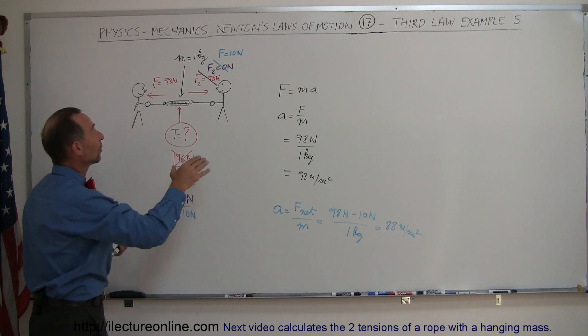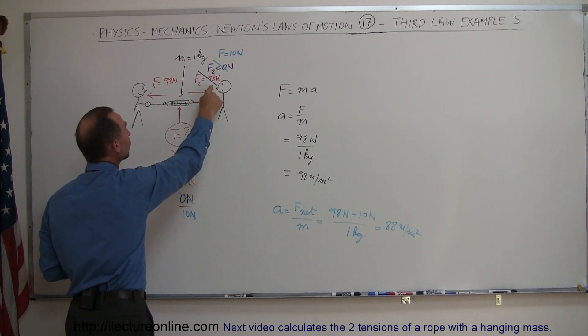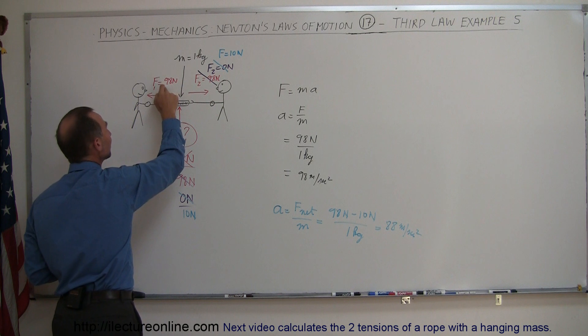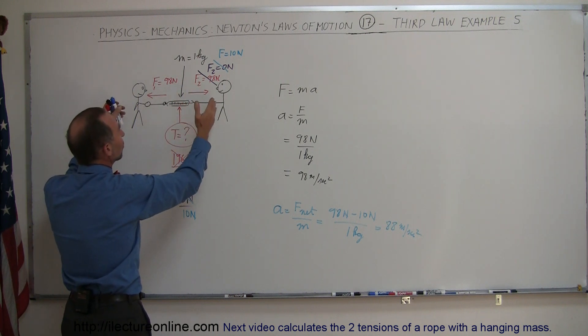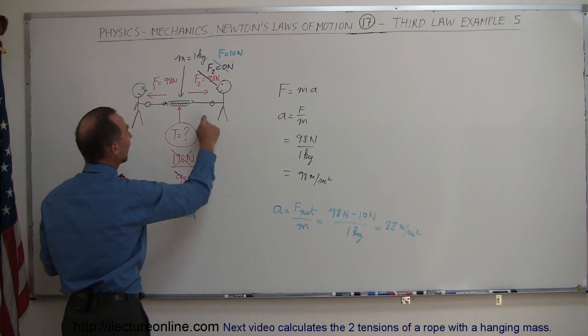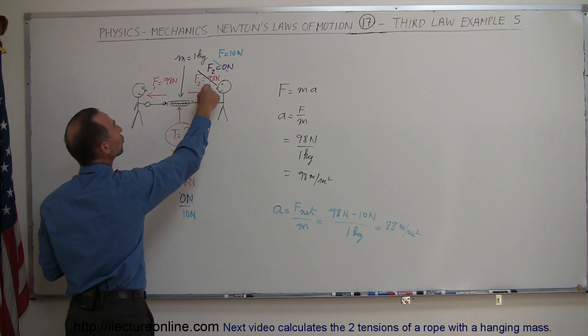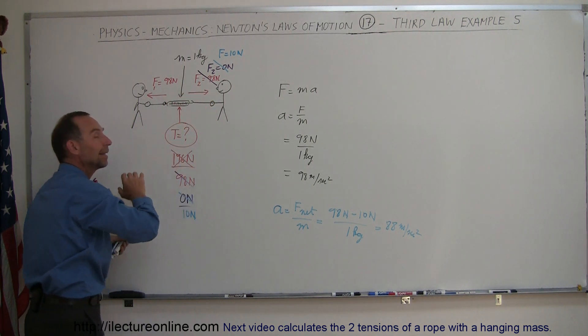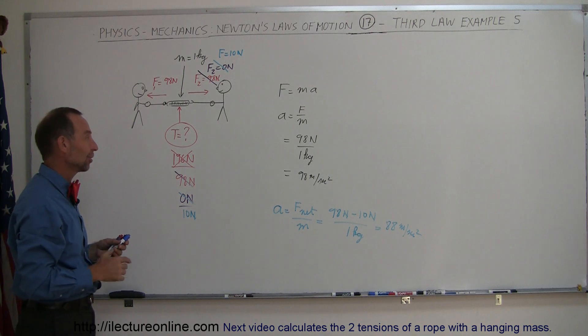And not until the person on the right pulls with a force of 98 Newtons, which equals the force on the left of 98 Newtons, that the acceleration would stop, acceleration would go to zero and the spring scale would indeed show a reading of 98 Newtons and not 196 Newtons.